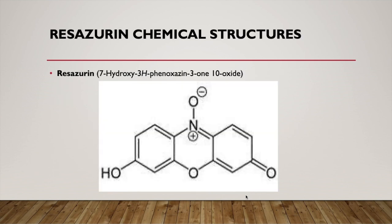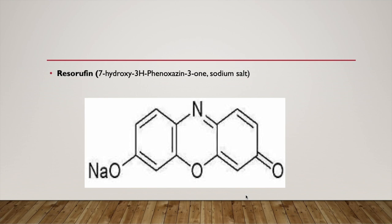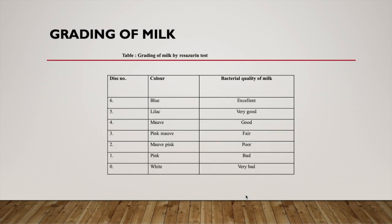This is the actual chemical structure of resazurin in its stable condition, which gets converted to resorufin when the overpotential changes to 0.3 volts. The milk is then graded based on color: blue is excellent, lilac is very good, mauve is good, pink is fair, more pink is poor, and white indicates very bad quality.